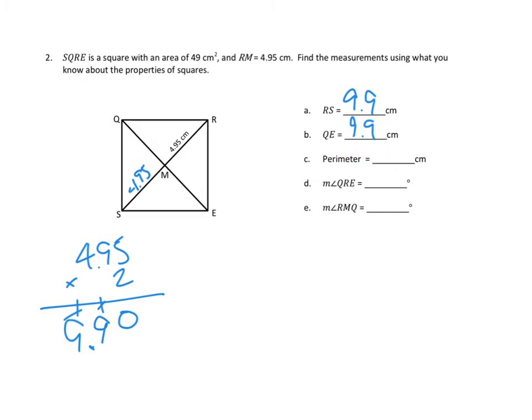Next, perimeter. We know the area — how can we use it to figure out the perimeter? The formula for area of a square is side times side equals area, or length times width, but they're the same thing. We know the area is 49 square centimeters. So what number times itself gives us 49 square centimeters?